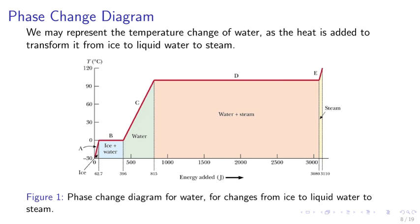Phase change diagram. We may present the temperature change of water as heat is added to transform it from ice to liquid water to steam. For example, starting at negative 30 degrees Celsius, we may add a certain amount of heat to heat it up to zero degrees Celsius, and then part B we're transferring from ice to water and so on to water to steam.